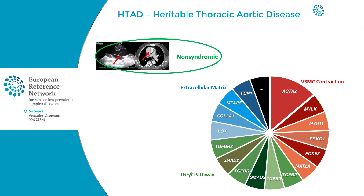The genes in heritable thoracic aortic disease can be grouped into those involved in smooth muscle cell contraction, adhesion to the extracellular matrix, or the TGF-beta pathway.